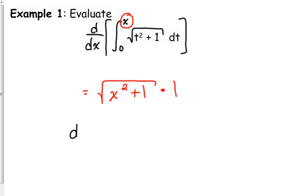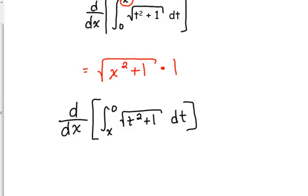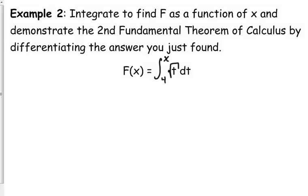If I modified this problem slightly and I changed it to x to 0, what would change about my problem is that's now my lower limit, so it would be negative square root of x squared plus 1, because that's my lower limit. You subtract the lower limit, so you just stick a negative in front of it, and still technically times 1. But we really don't have to write. These problems really are as easy as they were, guys.